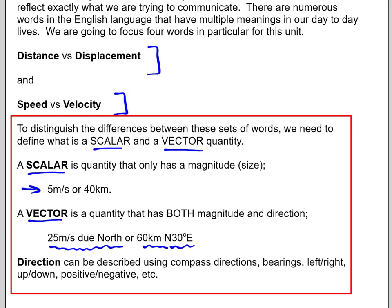Our directions themselves don't have to be just compass based. They could be left and right, up, down, positive, negative. There's lots of different ways to communicate direction. So scalar is just the magnitude, vector is magnitude with direction. And we're going to see how those tie in with distance, displacement, speed, and velocity.